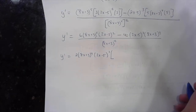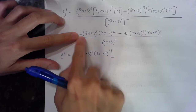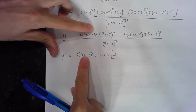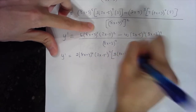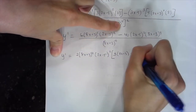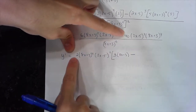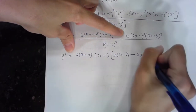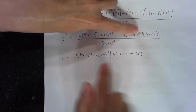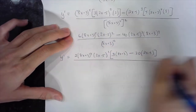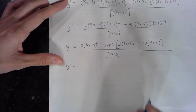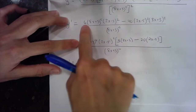What's left after extracting the GCF? From 6 I took a 2, so I need a 3. I had 5 of the (8x + 3)s and took out 4, so I need one more. I had 2 of the (2x − 5)s and took out 2, so that's done. Bringing down the minus sign: I took out 2 to make 40, so I need 20. I had 4 of the (8x + 3)s and took out 4, so that's done. I had 3 of the (2x − 5)s and took out 2, so I need one more. All over (8x + 3)^10.